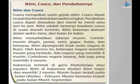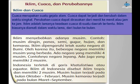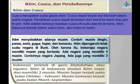Iklim, Cuaca, dan Perubahannya. Cuaca merupakan suatu gejala alam. Cuaca dapat terjadi dan berubah dalam waktu singkat. Perubahan cuaca dapat dirasakan dari menit ke menit atau jam ke jam. Iklim adalah lamanya keadaan cuaca di suatu daerah tertentu. Iklim biasanya diamati dalam waktu lama, dari bulan ke bulan. Iklim menyebabkan adanya musim, contohnya musim dingin, panas, semi, gugur, hujan, dan kemarau.